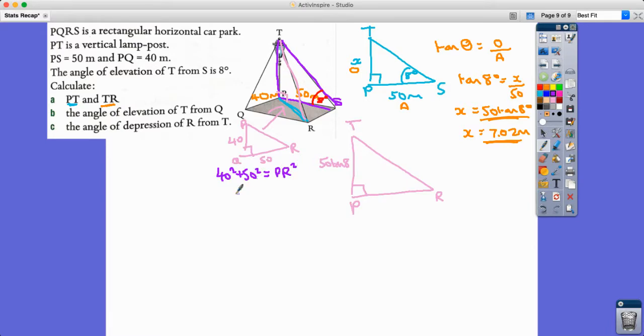40 squared plus 50 squared equals PR squared. If I work that out, I get 4100 equals PR squared, so PR is, to be exact, the square root of 4100.